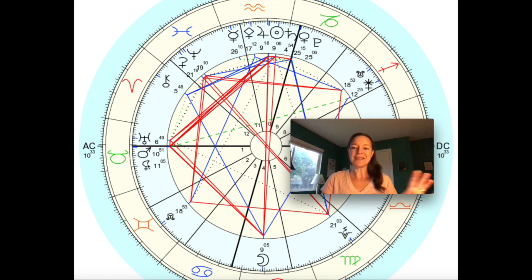I'd call it a stellium, but one is Black Moon Lilith, and some people might not. But we have Uranus, Mars, and Lilith here, all in Taurus, squaring the Sun and Jupiter, Saturn as well, squaring the Moon, of course. So this is the significant angle aspects going on here.